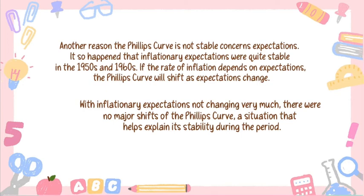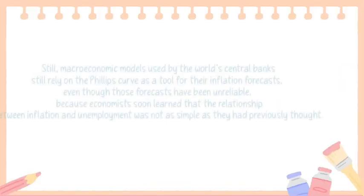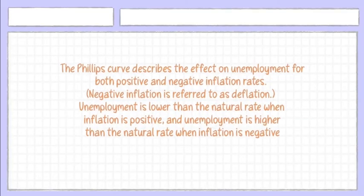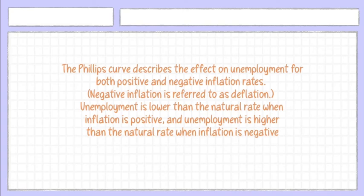With inflationary expectations not changing very much, there were no major shifts of the Phillips Curve, a situation that helps explain its stability during the period. Still, macroeconomic models used by the world's central banks still rely on the Phillips Curve as a tool for their inflation forecast, even though those forecasts have been unreliable because economists soon learned that the relationship between inflation and unemployment was not as simple as they had previously thought.